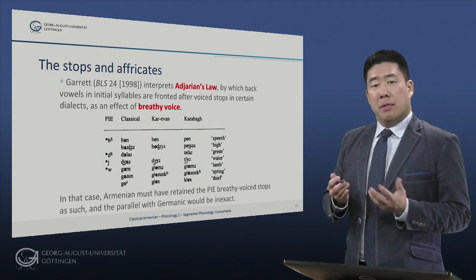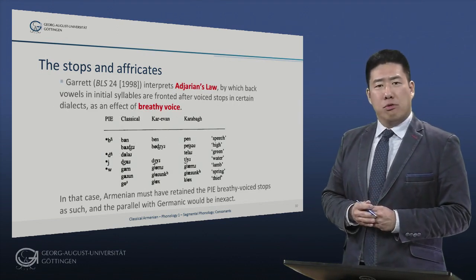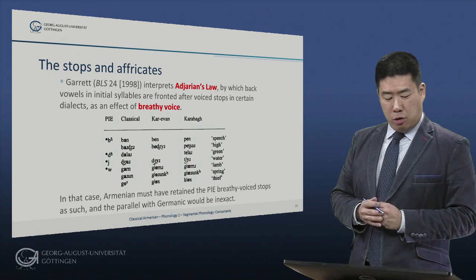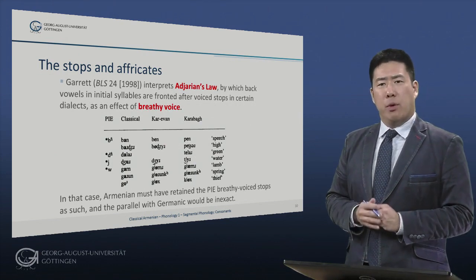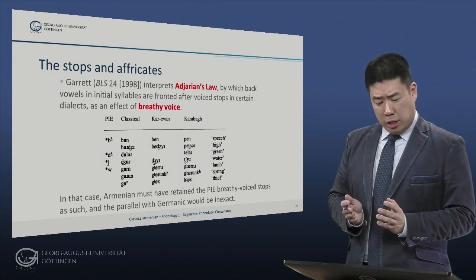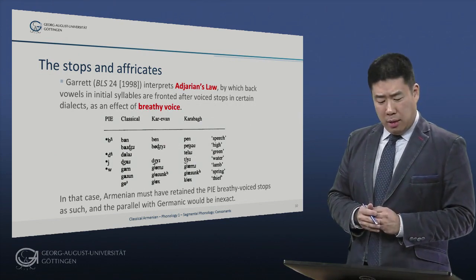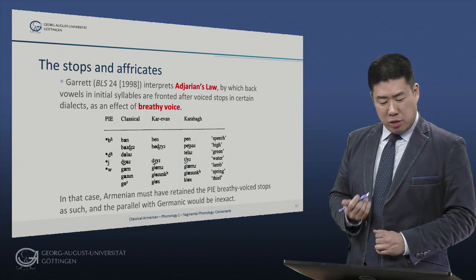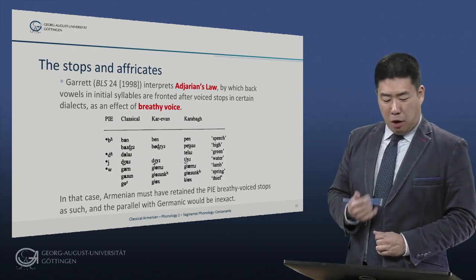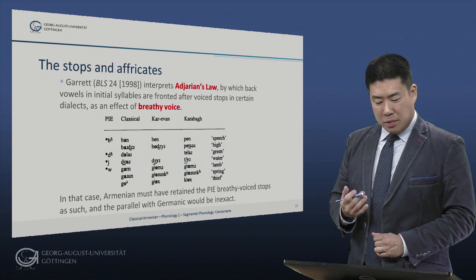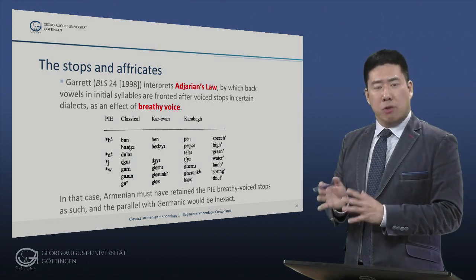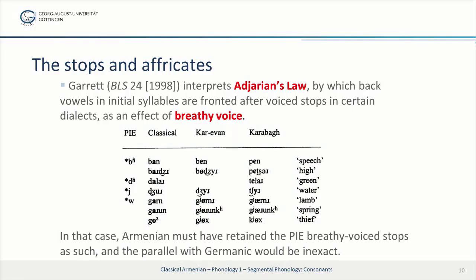One interesting proposal by Andrew Garrett interprets Adjaryan's law as an effect of breathy voice. Adjaryan's law is a rule by which back vowels in initial syllables are fronted after voiced stops in certain, mostly Eastern, Armenian dialects. You can see some examples right here.